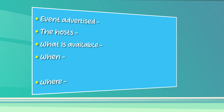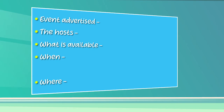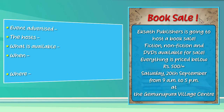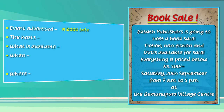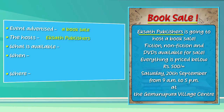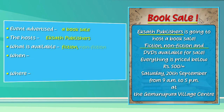Now what did you write for the first one? It requires you to write the event advertised. The event advertised is a book sale, so you had to write 'a book sale' there. Then the hosts — who are the people organizing this event? You have to write 'EXAT Publishers' there. Remember, as it's a proper noun, you need to start with capital E and capital P. Now the third one — what is available? Fiction, non-fiction, and DVDs. You have to write all three.